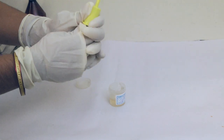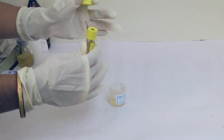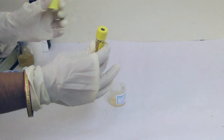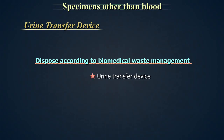The urine automatically flows into the tube in accordance with the exact defined vacuum. Remove the filled tube from the urine transfer device and invert the tube several times after filling. Dispose of the urine transfer device and the urine beaker accordingly.